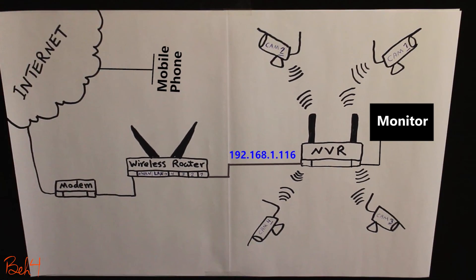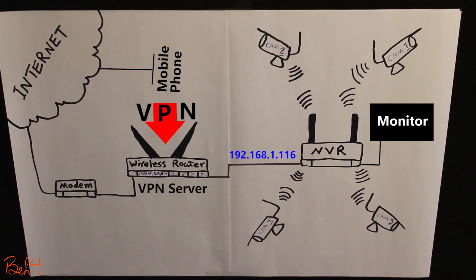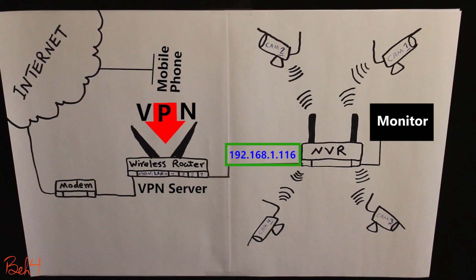Another way would be to use a VPN connection to my VPN server at home when I'm outside the network. That actually puts me virtually on my home network, so I can simply open a browser, type in the NVR's IP address, and connect. I definitely prefer VPN — it's even more secure than doing port forwarding. Every time I want to check and monitor the cameras, I use a VPN connection and I don't have to worry about any security holes or unauthorized access anymore.